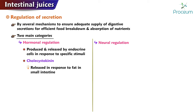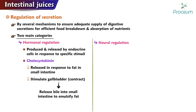Cholecystokinin is released in response to the presence of fat in the small intestine and stimulates the gallbladder to contract, releasing bile into the small intestine to emulsify the fat.